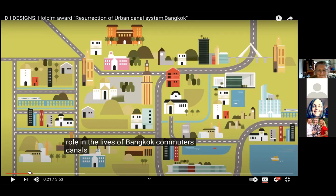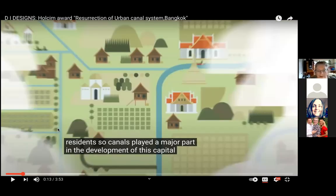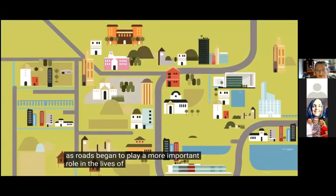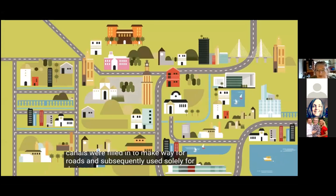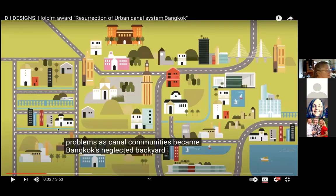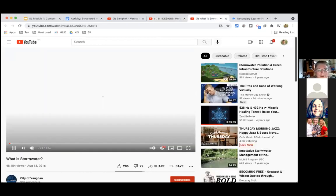Let's watch that segment one more time. As roads began to play a more important role in the lives of Bangkok commuters, canals were filled in to make way for roads and subsequently used solely for drainage, resulting in wastewater problems as canal communities became Bangkok's neglected backyard. Now we've learned about canals — let's look at why is it a problem to not have canals and farms.